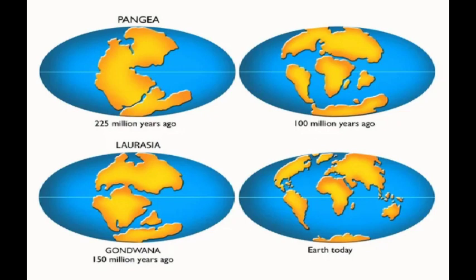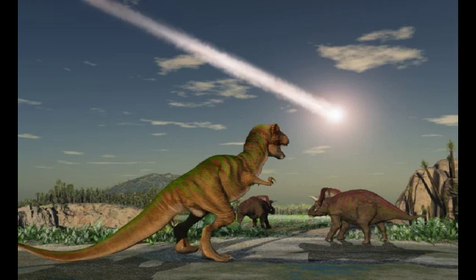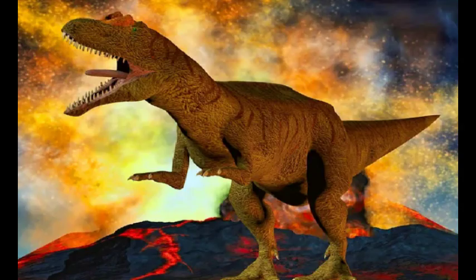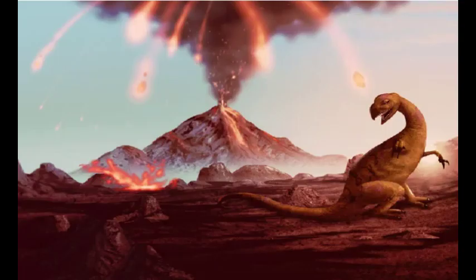And that concludes our journey through five major mass extinctions in Earth's history. These events have shaped the trajectory of life on our planet, highlighting the delicate balance and interconnectedness of species and ecosystems. If you enjoyed this video, don't forget to subscribe to our channel for more captivating content. Thank you for watching, and until next time, stay curious and keep exploring.